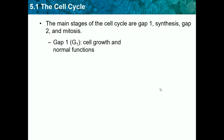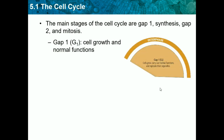Gap 1, or G1, is where cells grow and normal functions occur. This is the first part of our image. In Gap 1, cells grow, carry out normal functions, and replicate their organelles. Basically, the cell is growing in its first stages, and its organelles are forming and starting to function normally.